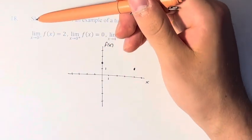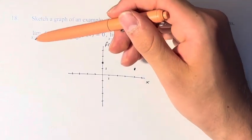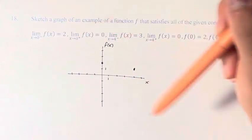Next up, we have these limits. So the limit as x approaches 0 from the left, that's what that minus sign means, is 2.